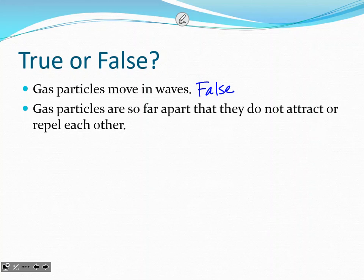Next statement: gas particles are so far apart that they do not attract or repel each other — true. There are no attractive or repulsive forces. The main assumption of the kinetic molecular theory is that particles just bounce right off. Intermolecular forces and electron-repulsion forces do not play a role here.